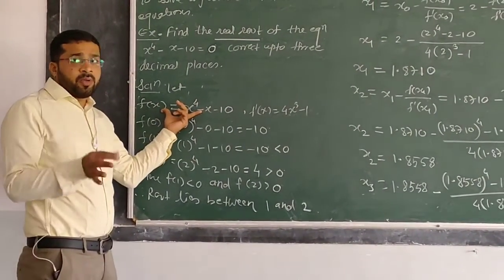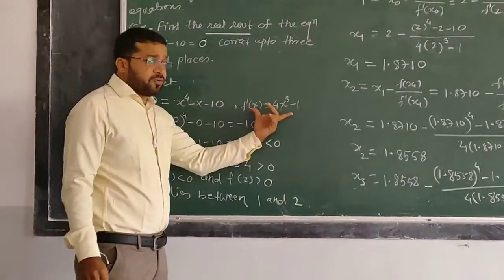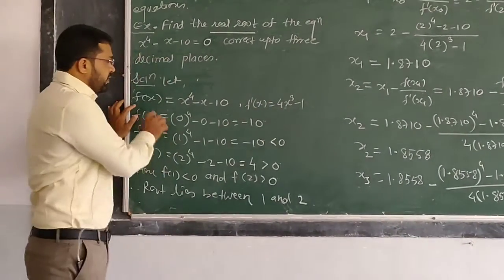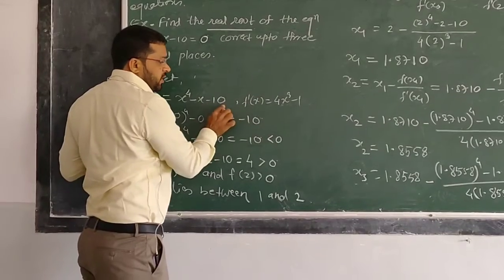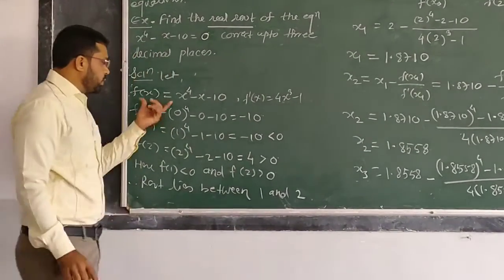In Newton-Raphson method or formula, we require the derivative of the function. So the derivative is f'(x) = 4x³ - 1, and the derivative of 10 is zero.